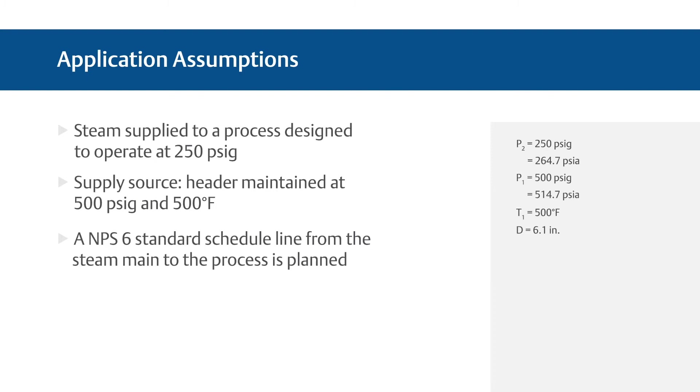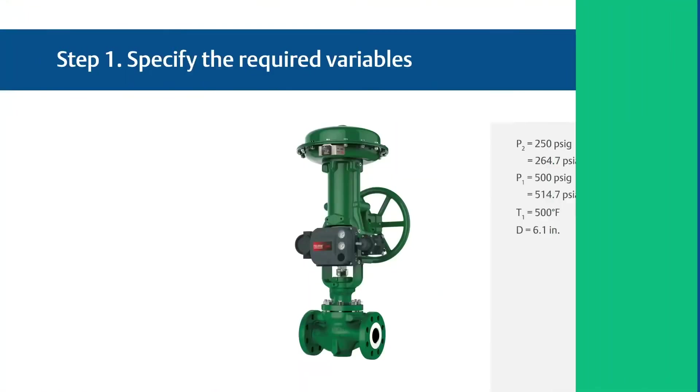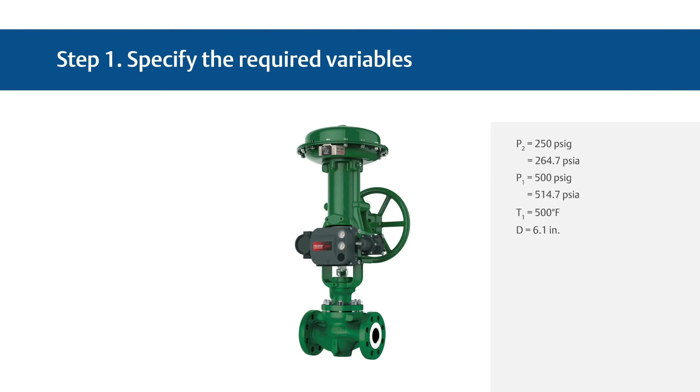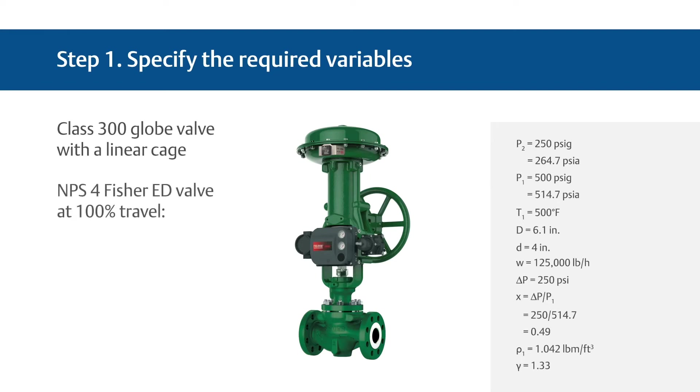An NPS 6 or DN 150 standard schedule line from the steam main to the process is being planned. Note that a 6-inch standard schedule pipe has an inside diameter of 6.1 inches. Also, make the assumption that if the required valve size is less than NPS 6 or DN 150, it will be installed using concentric reducers. Now let's go through the process to determine the appropriate Fisher ED valve with a linear cage. The first step is to specify the variables required to size the valve. The desired valve design is a Class 300 globe valve with an assumed size of 4 inches and a linear cage. The other service conditions are shown. We'll keep these conditions on screen throughout for reference.